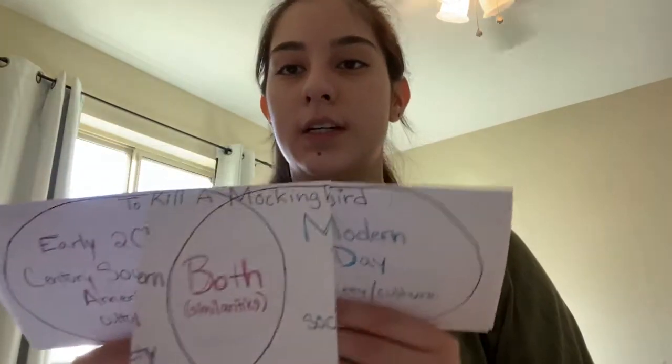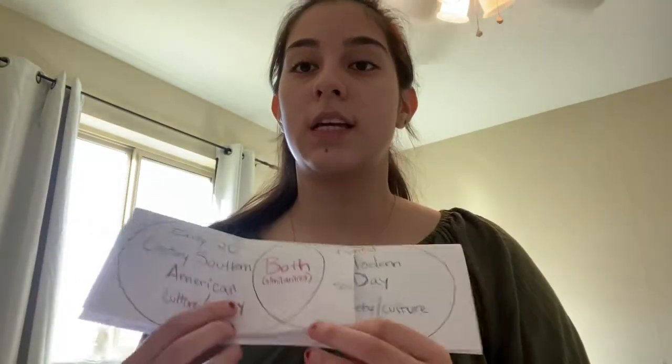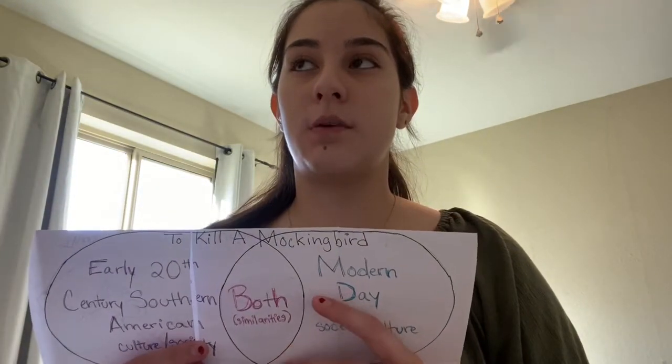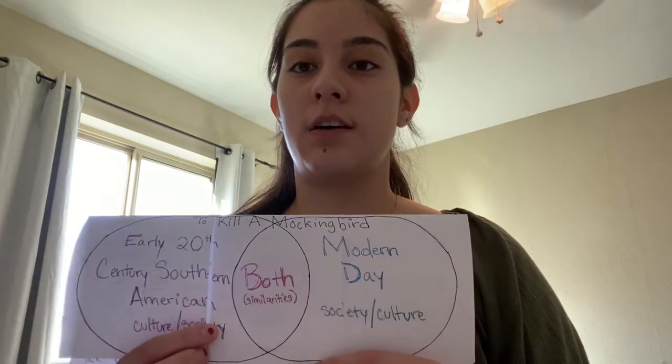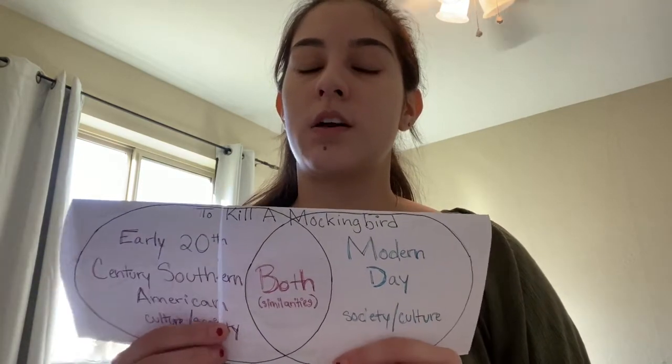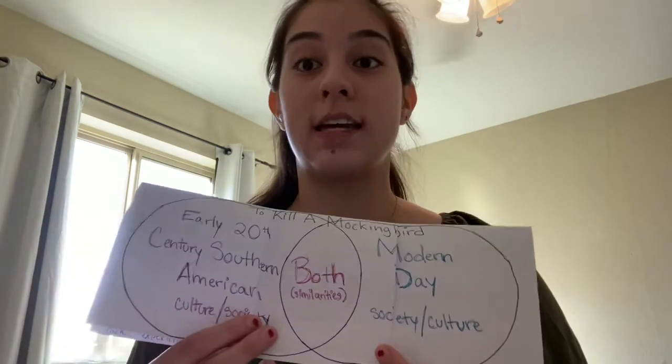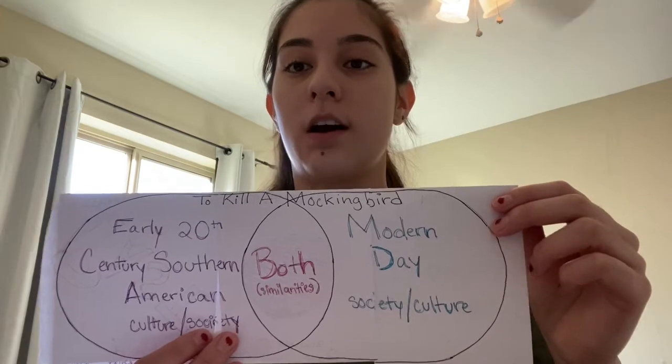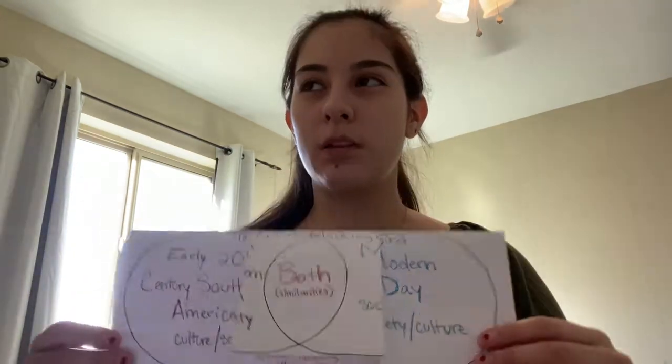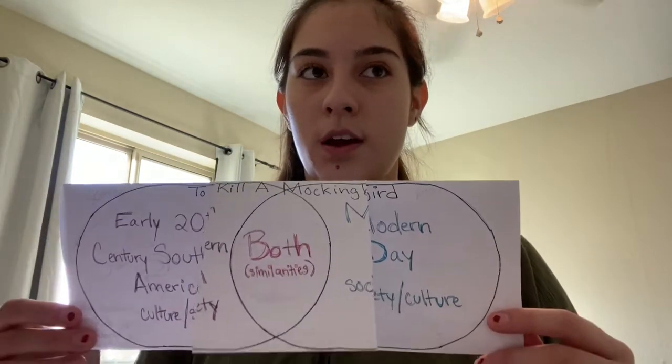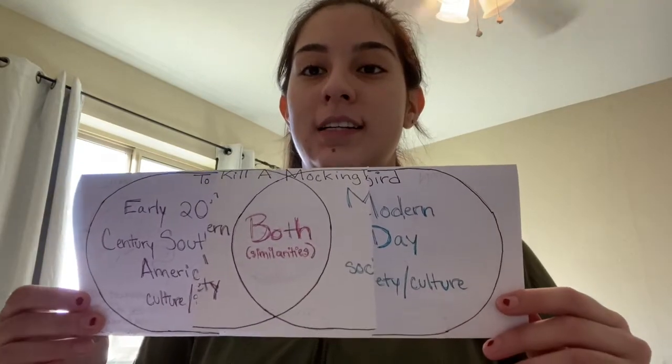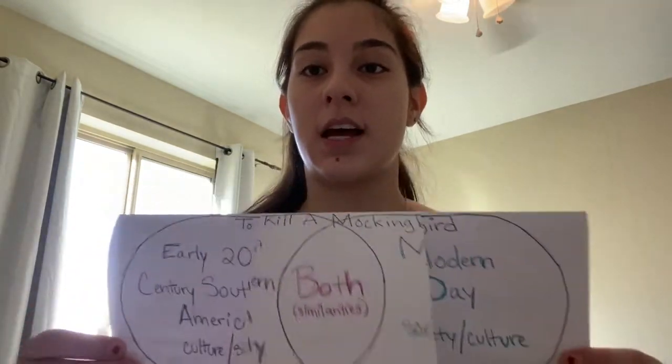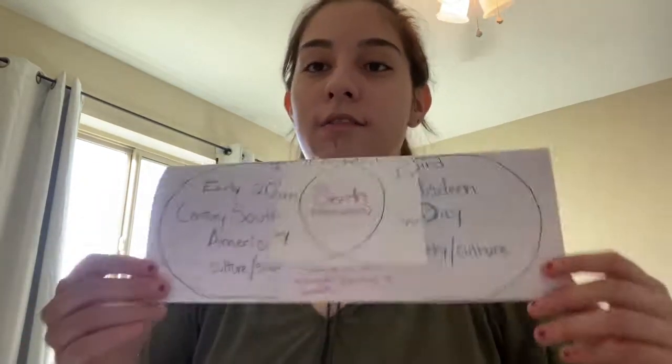So real quick about my foldable, I'm using it for the passage that we did for annotated reading on To Kill a Mockingbird at the end of chapter 2. The reason I chose to do the Venn diagram foldable is because I really wanted my students to contemplate the disparities between society back then versus today.